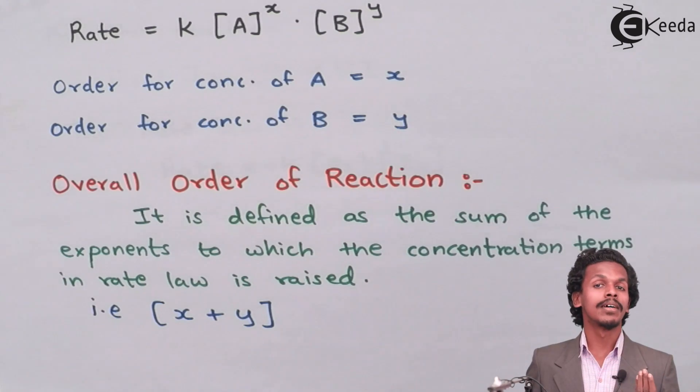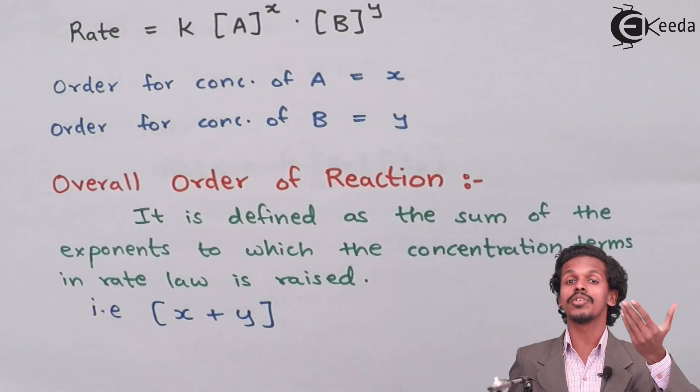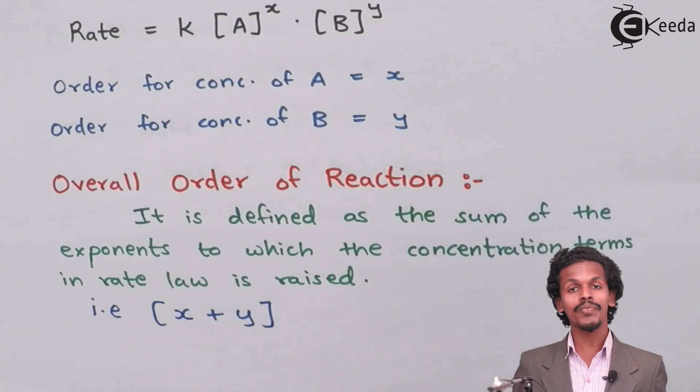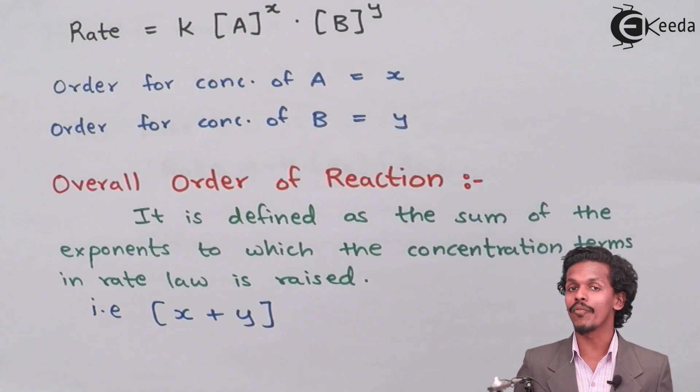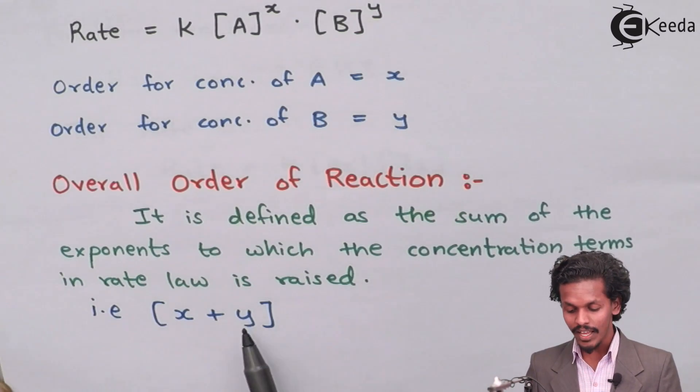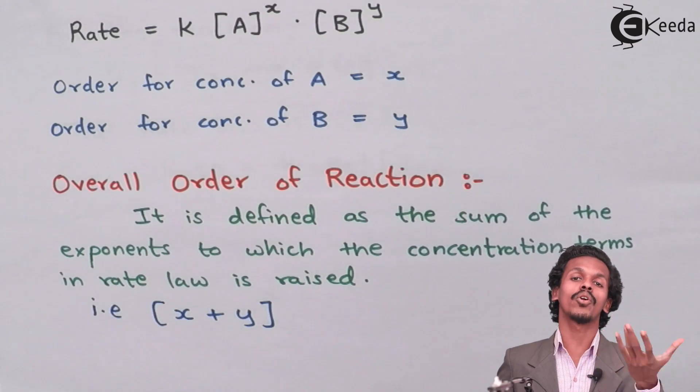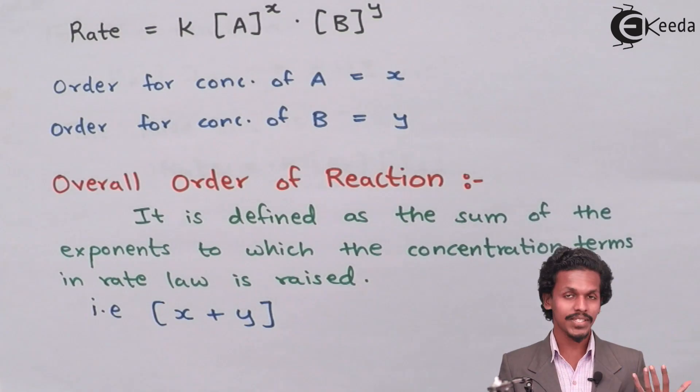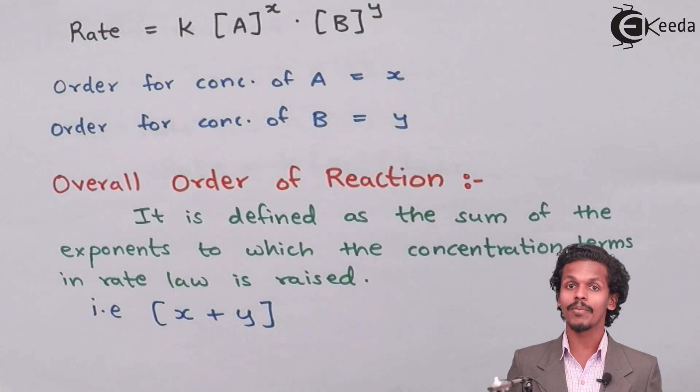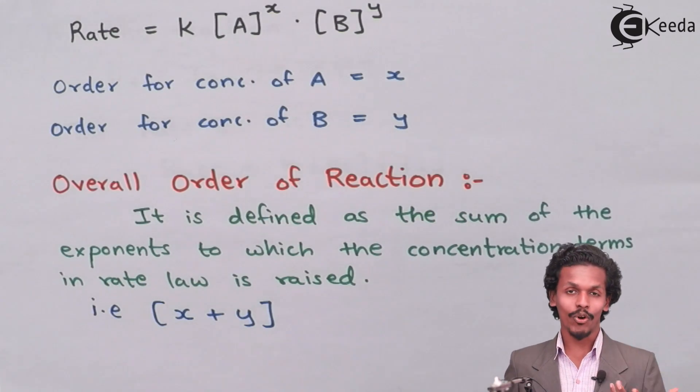In this case, A raised to X, B raised to Y. So therefore, these experimental exponents are raised to the reactants. And what we have to do? We have to make it a sum of it, that is X plus Y. So in this case, the X plus Y will be the overall order of reaction. It's very simple. So let us see an example so that we could describe what is actually the order of reaction.